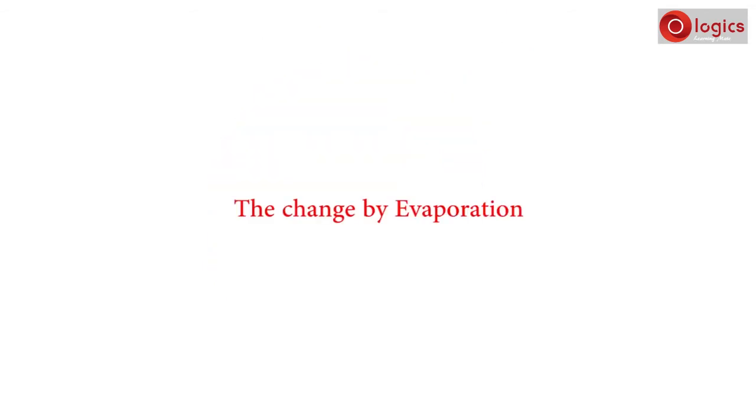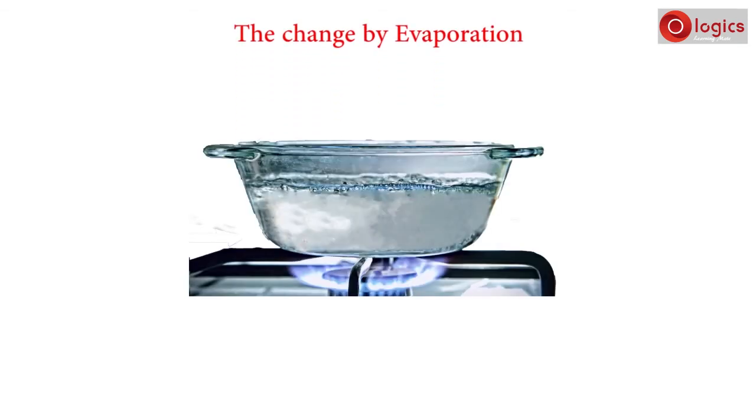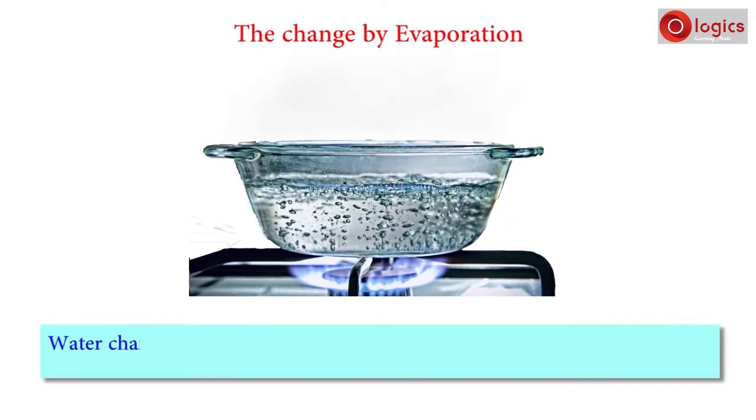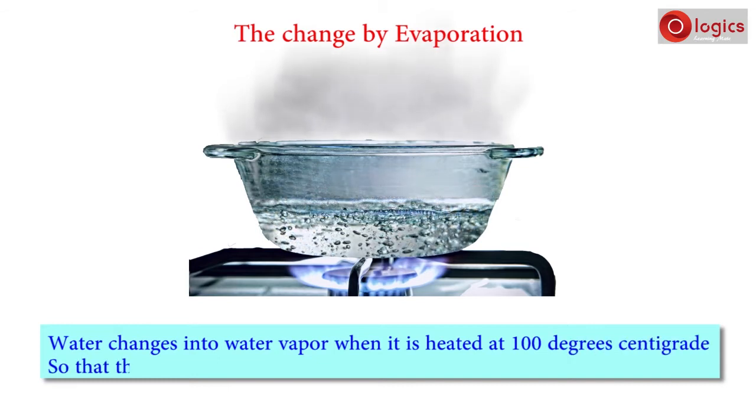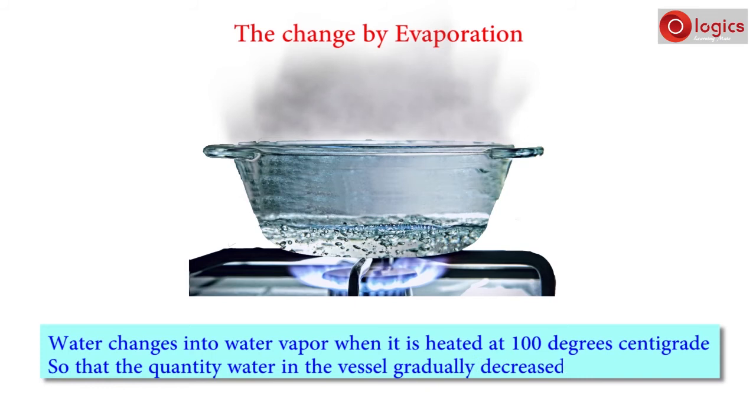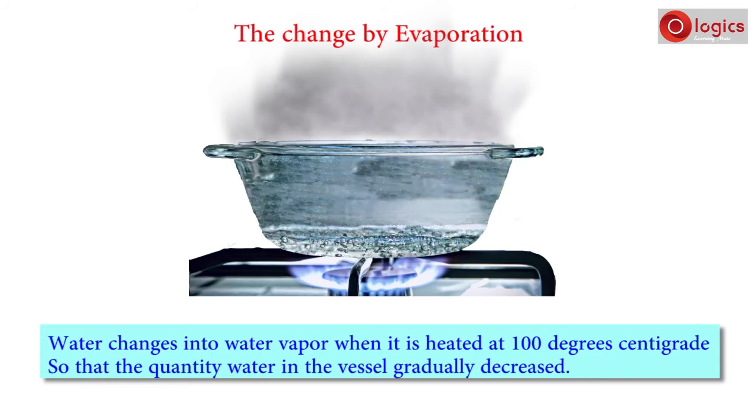Bring the change by evaporation. When water is heated for some time, what happens? Water changes into water vapor when it is heated at 100 degrees centigrade, so that the quantity of water in the vessel gradually decreases. Here the change happens due to evaporation.